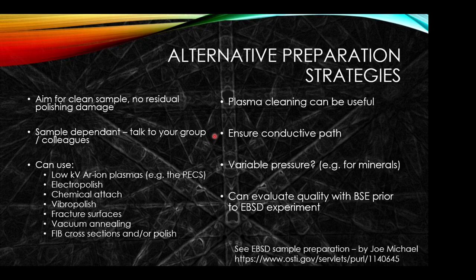There are a whole range of strategies for preparation. You want to aim for a clean sample with no residual polishing damage. It is effectively sample dependent, so talk to your group or colleagues. The variety of methods available include: low kV argon ion polishers such as the PECS system at Imperial College, electro-polishing for chemical attack removal, chemical etching to remove material, vibratory polish which is gentler than rotary polish, and in some instances looking at facets from pure fracture surfaces.